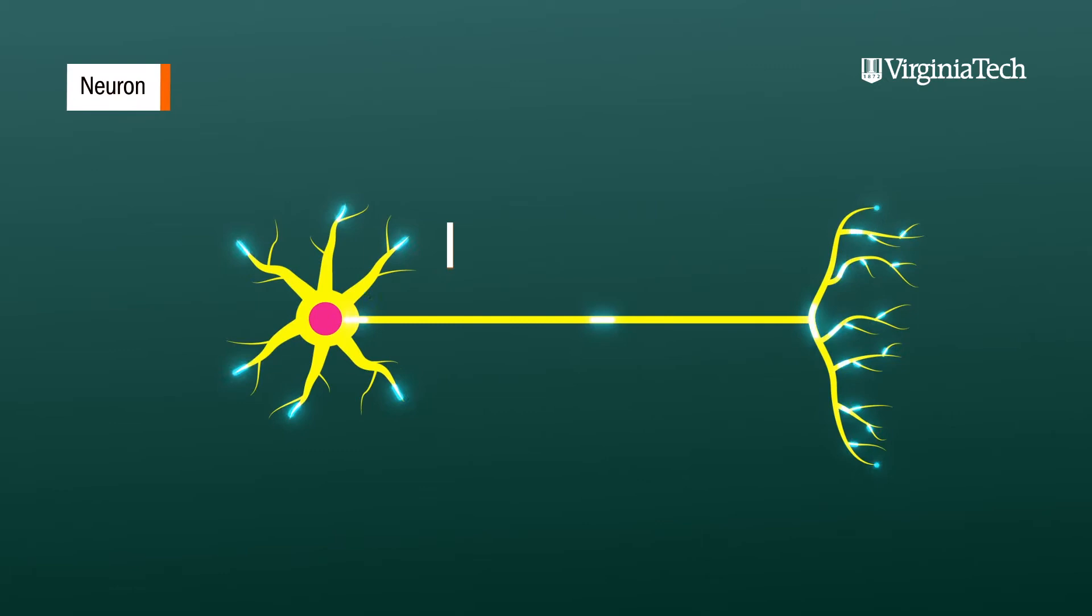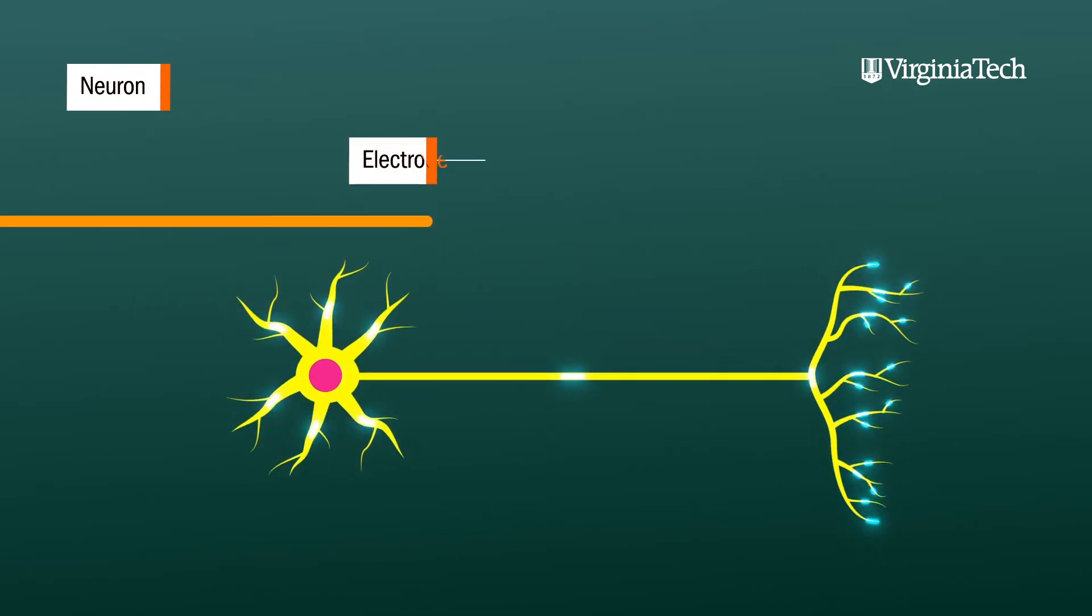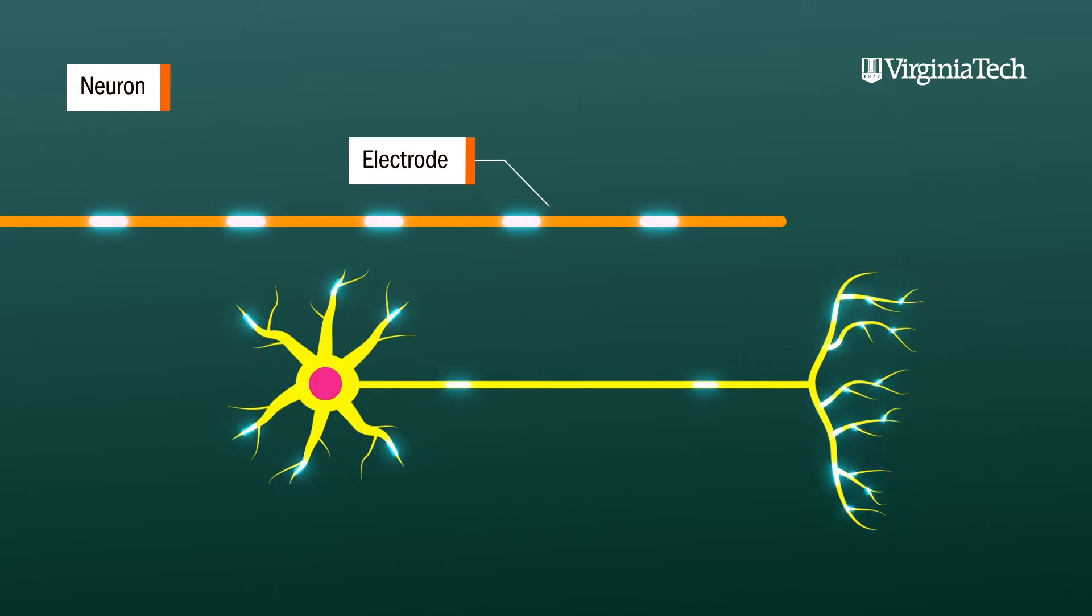The neurons sense a lot of signals in the brain like chemical signals, and when they are active they have electrical signals called action potentials. This is giving a lot of information about how the brain is functioning. We can record those electrical signals by putting an electrode in the vicinity of the neuron that's active.